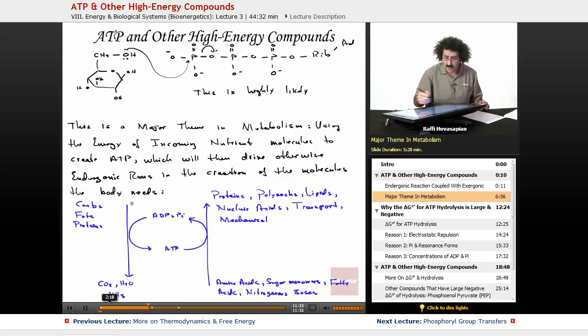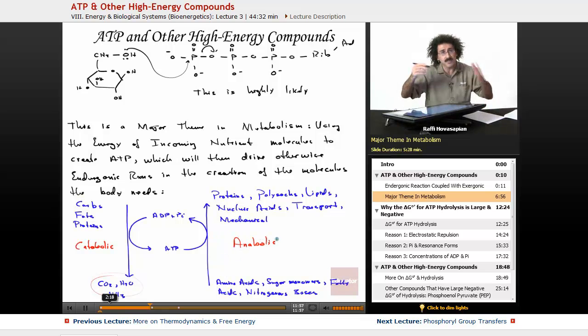So, we take in our nutrients. The catabolic pathways of the body break things down. They spit out the energy-depleted products. The energy that they take from these carbs, fats, and proteins, they use it to take adenosine diphosphate plus inorganic phosphate to create ATP. Now, ATP can be used to drive the anabolic pathways. Anabolic means the creation to actually make the proteins, the polysaccharides, the lipids, the nucleic acids that the body needs in addition to all of the other energy needs. That's it. That's all that's going on. This is metabolism. Catabolism, anabolism, together they are your metabolism. That's all that's happening. So, ATP as the primary energy intermediary in this whole process. That's it.